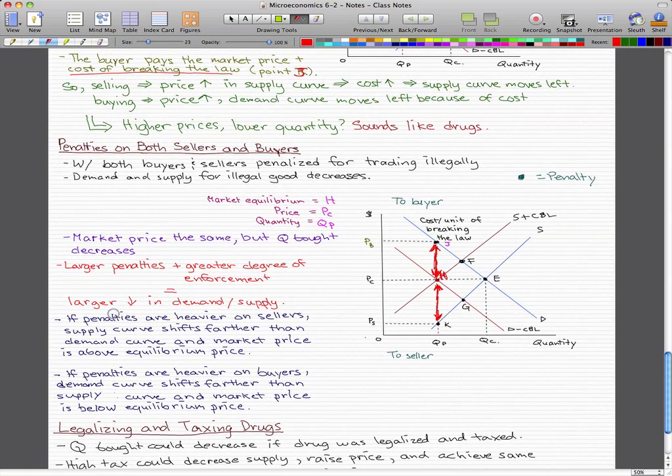Now, if penalties are heavier on sellers, the supply curve shifts farther than demand curve, and the market price is above the equilibrium price. And if the penalties are heavier on buyers, demand curve shifts farther than the supply curve, and the market price is below equilibrium price. And these two things are something that you need to remember.